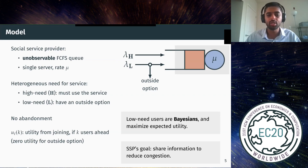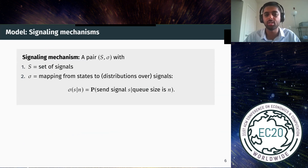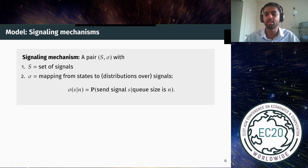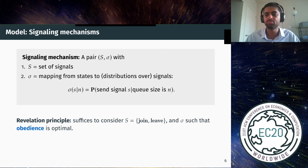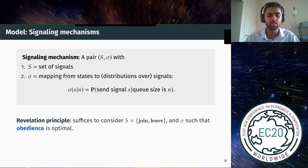We use the methodology of Bayesian persuasion. The service provider commits to sharing information according to a signaling mechanism, which consists of a set of possible signals and a mapping from each state — in this case the queue length — to a distribution over signals. While this is very general, we can use the revelation principle to restrict attention to mechanisms with only two signals: action recommendations of join or leave, with a mapping sigma such that obedience is optimal. That is, if a low-need user is given the message join, they find it optimal to join the queue; if given the message leave, they find it optimal to use the outside option.